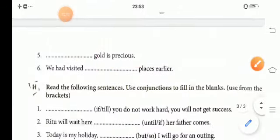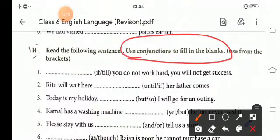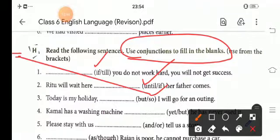Now, the H1. Here, conjunction. We have to fill the conjunction from this bracket. It is said that, if you do not work hard, you will not get success. Ritu will wait here until her father comes. The third one is, today is my holiday. So, I will go for an outing.